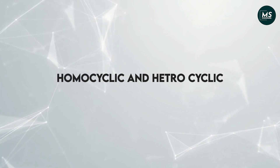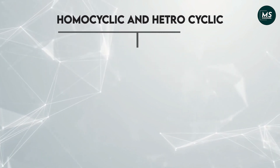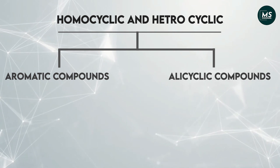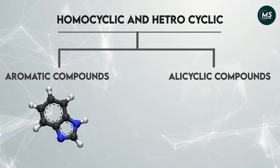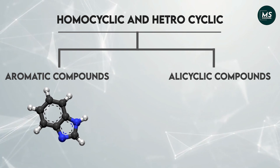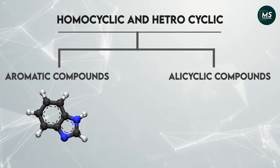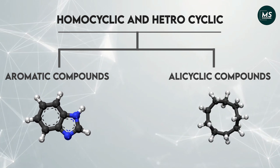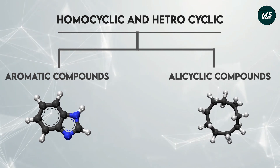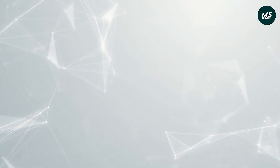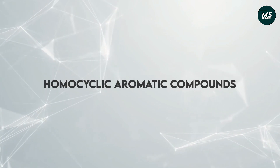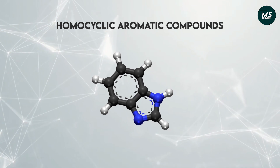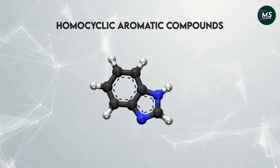Homocyclic and heterocyclic compounds can be further classified into two categories: aromatic compounds and alicyclic compounds. Cyclic compounds which are unusually stable are known as aromatic — named due to their pleasant aroma. Alicyclic compounds are those cyclic compounds which are not aromatic. Aromatic compounds which are homocyclic are called homocyclic aromatic compounds.